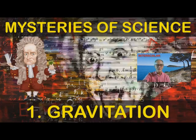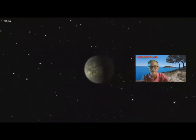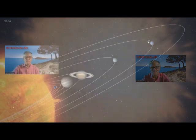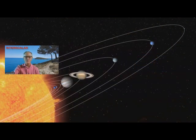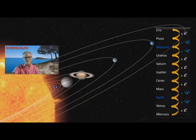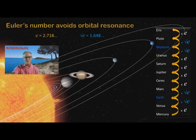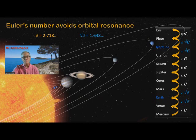Please watch my video, Mysteries of Science: Gravitation, on this topic. Orbital resonance can excite, destabilize, and even destroy a planetary system. This can happen when orbital periods approach simple integer ratios like one-half, two-thirds, or three-fourths. This is why the orbital periods in the solar system are in irrational ratios. Euler's number 2.718, the base of natural logarithms, is not only irrational but transcendental, and that makes orbital resonance impossible. This is why the ratios of the main orbital periods approximate Euler's number and its square root.